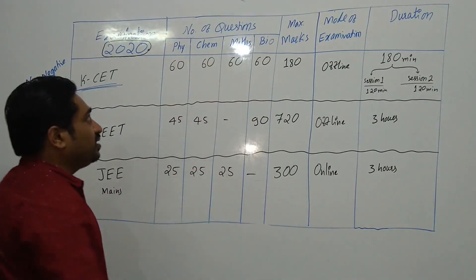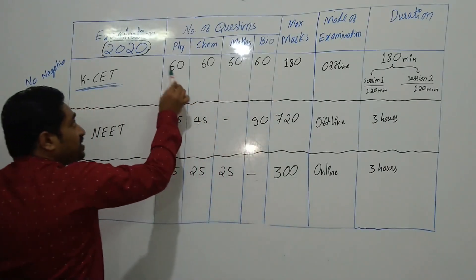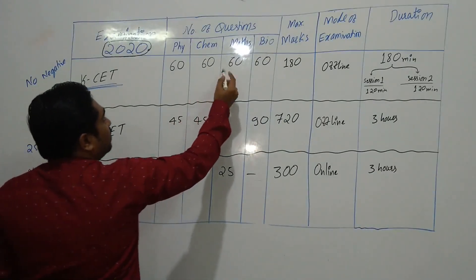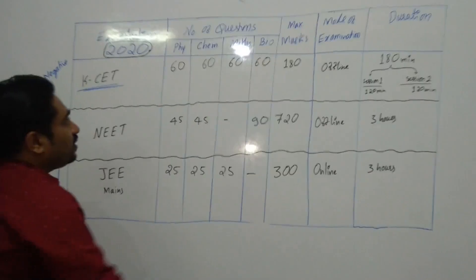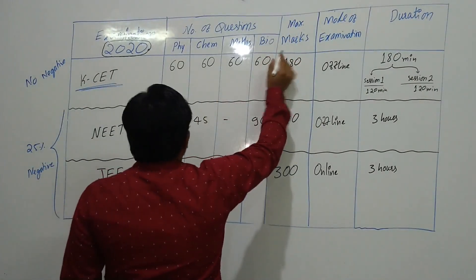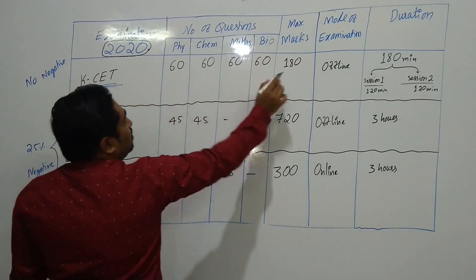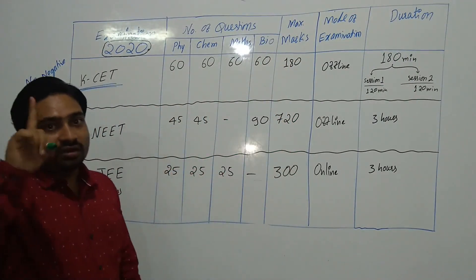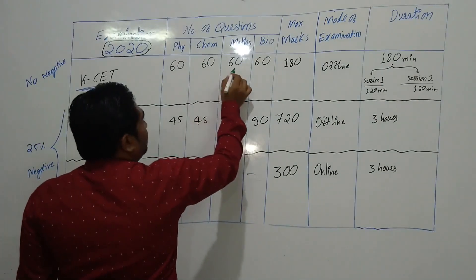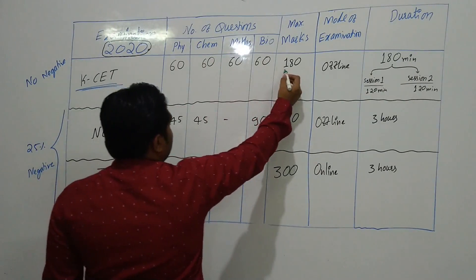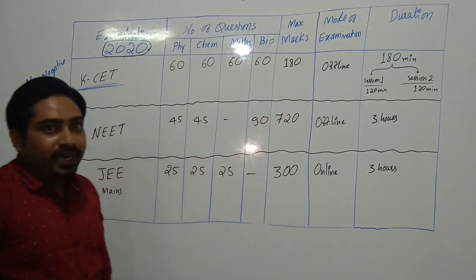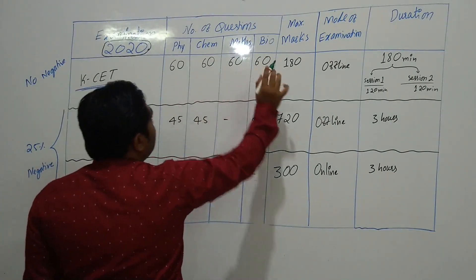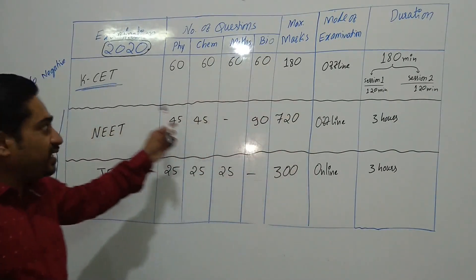Math and biology are optional, but physics and chemistry are compulsory. You must write physics and chemistry, and then choose either mathematics or biology. The maximum marks for KCET are 180 marks — one mark per question. If you take physics, chemistry, and mathematics, that is 60 + 60 + 60 = 180 marks. If you take biology instead of mathematics, your score is based on physics, chemistry, and biology.